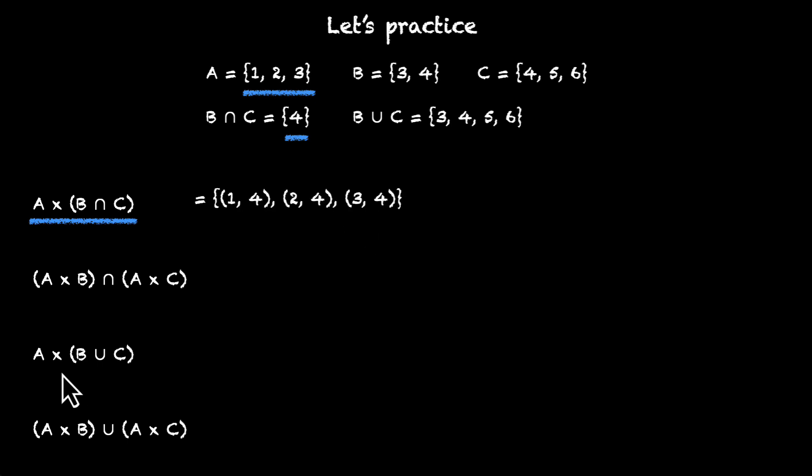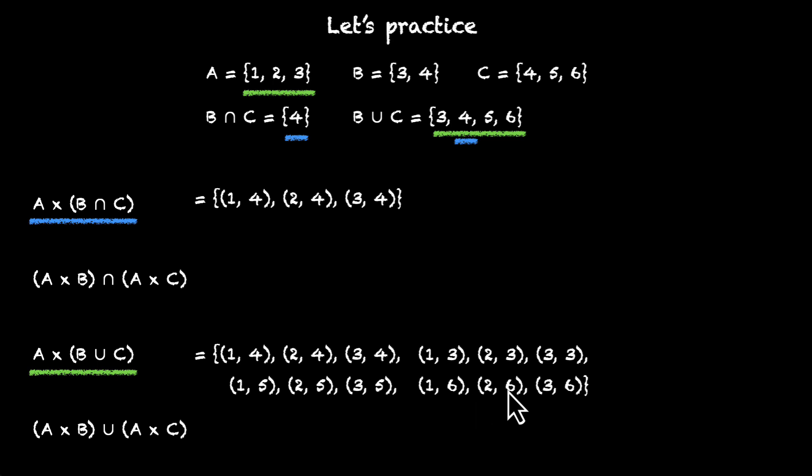Let's do the same for A times B union C. For this, we need A and B union C. We've already done this for 4: (1,4), (2,4), and (3,4). Now for 3: (1,3), (2,3), and (3,3). For 5: (1,5), (2,5), and (3,5). For 6: (1,6), (2,6), and (3,6). This has 3 times 4, which is 12 elements.